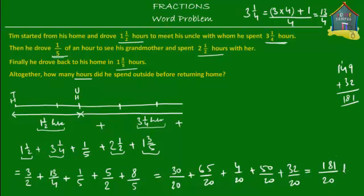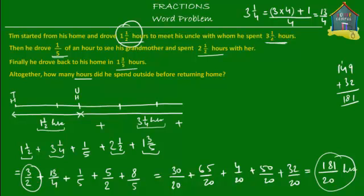That's how many hours he spent outside before returning home. But does this fraction make sense? One hundred and eighty-one over twenty hours — how many hours is that actually? One final step is to convert this improper fraction back to a mixed number, because mixed numbers make more sense. For example, one and a half hours makes more sense than three over two hours, and three and a quarter hours makes more sense than thirteen over four hours.